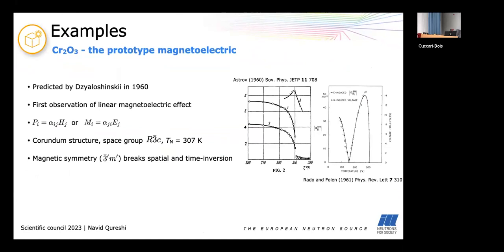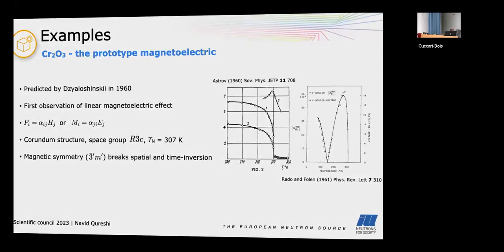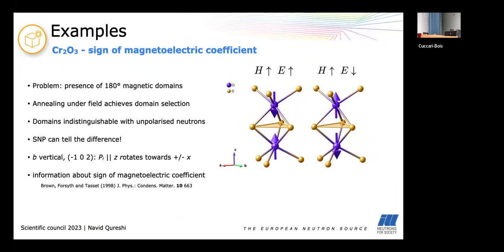So now to the examples. The first example is chromium oxide because it's the material which was first predicted to have a magnetoelectric effect, the first to be observed to have one and it was the first sample which was used in cryopad. It has a centrosymmetric space group and has a magnetic transition at 307K so you can conveniently investigate it at room temperature and it has a magnetic structure which breaks spatial and time inversion which is a prerequisite for a magnetoelectric material.